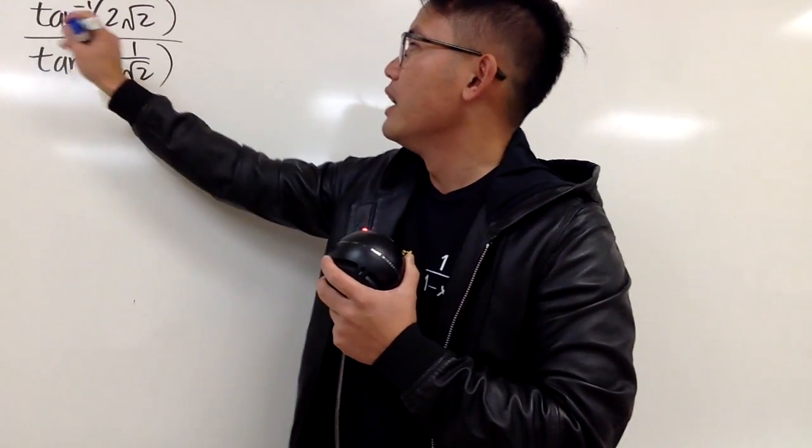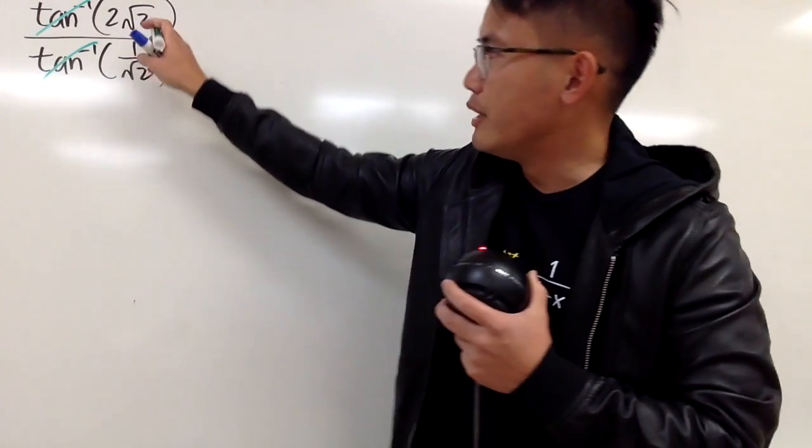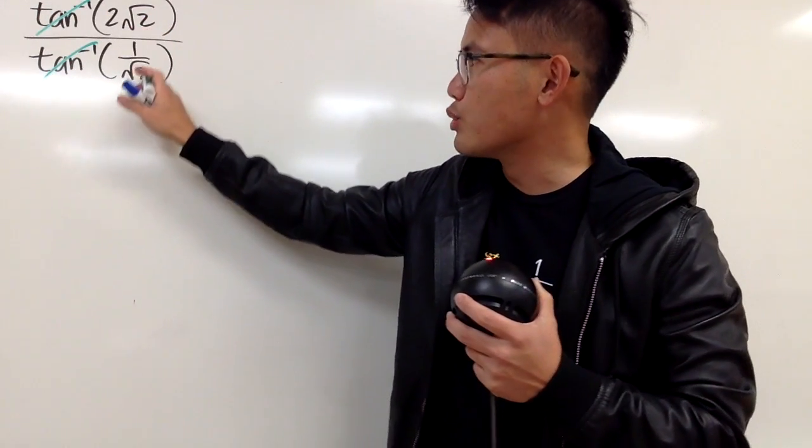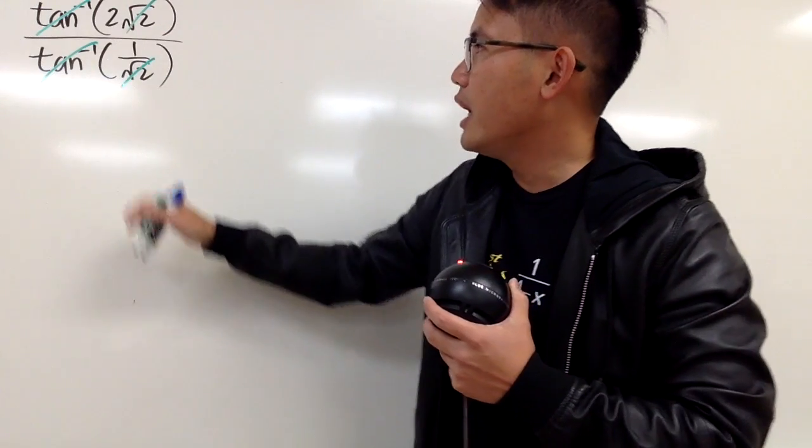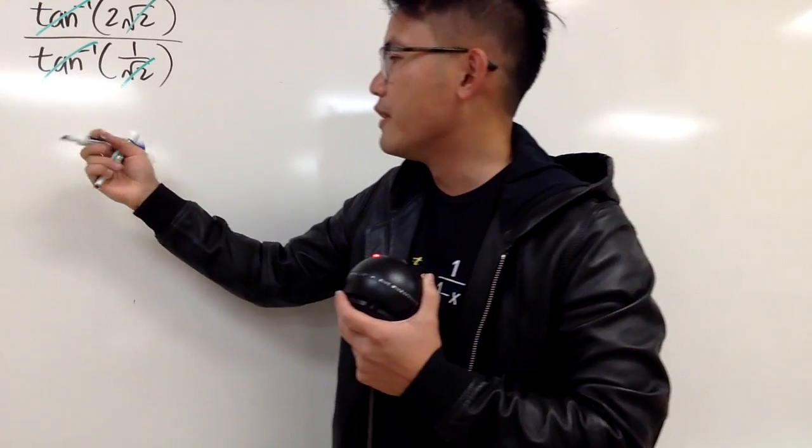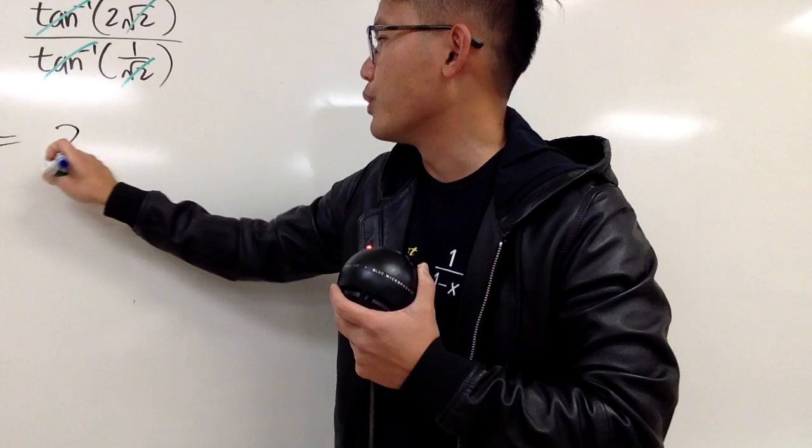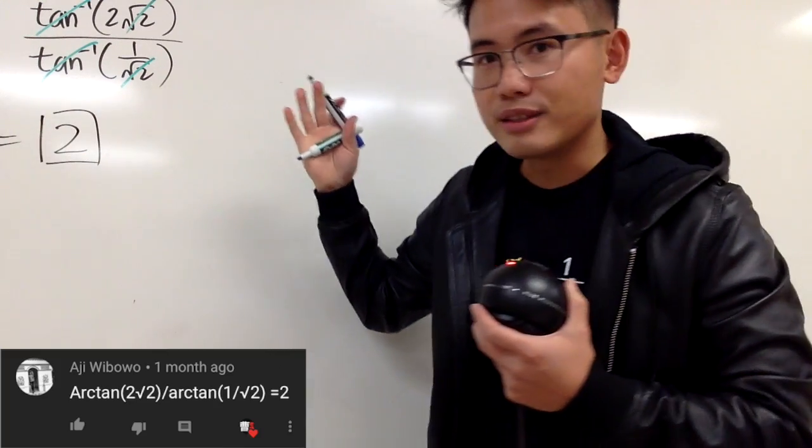because you see that the inverse tangent, inverse tangent, they can cancel. And then right here, you see √2, and you also see √2 right here, you can cancel. And, of course, you have just 2 over 1, therefore, the answer is just nice, equal to 2. And, as always, that's it.